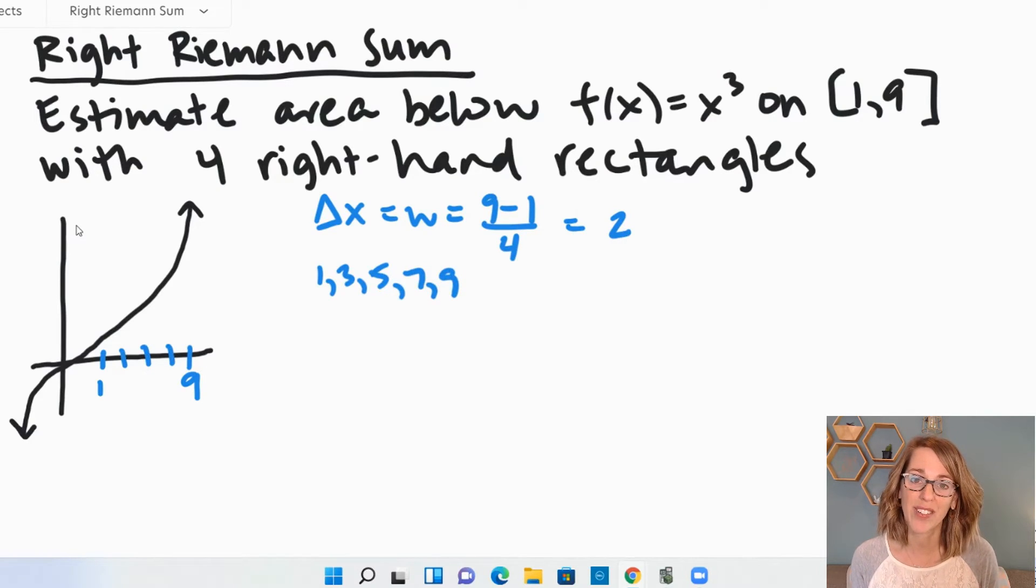These are right-hand rectangles. So as I look at the rectangles to come up with their height, the height is going to be the function value. That's going to get me up to the curve. It's going to be f of x star. So that star just means the sample point. In this case, the sample point is the right-hand side.